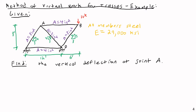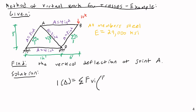So this is going to be a little bit complex, but we can handle it. I'm going to be applying the formula that we developed last time. Remember: 1 times delta equals the sum of virtual forces internal times the actual internal forces times L divided by AE. So a unit force times the actual deflection on a joint equals the sum of the forces internal caused by that unit force at that joint times the real internal forces times L over AE. F_VI is going to be our virtual internal forces, and F_I is going to be our real internal forces. Most of our work is just building up all these pieces.